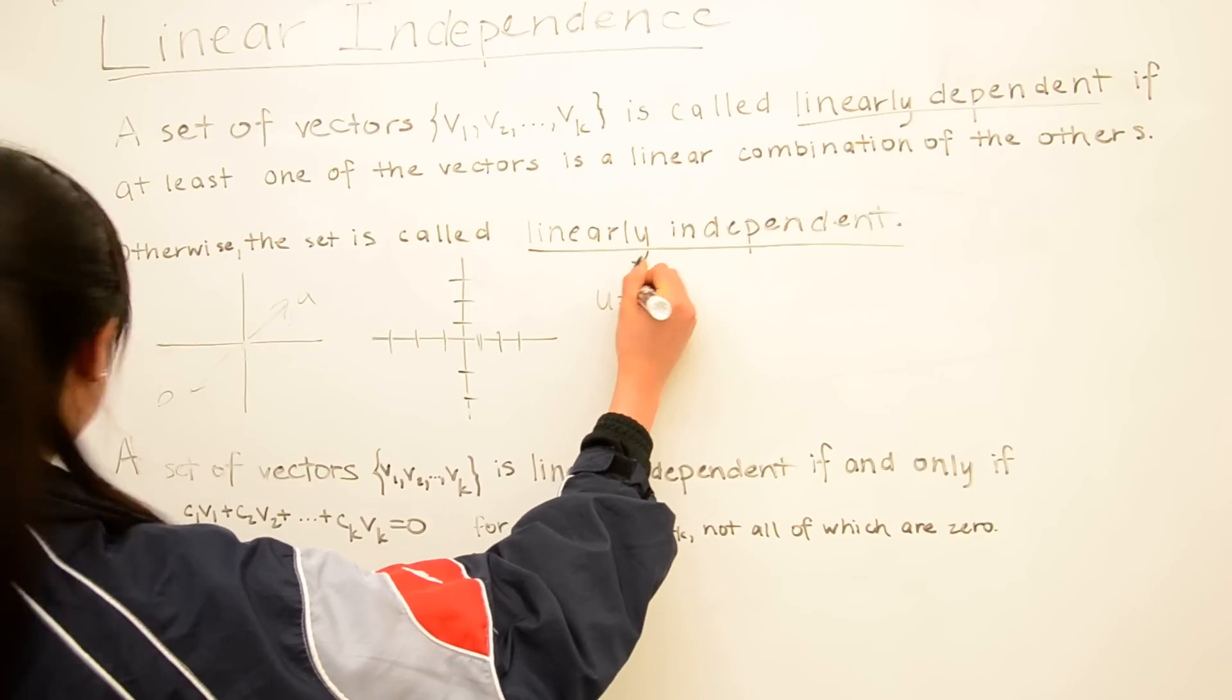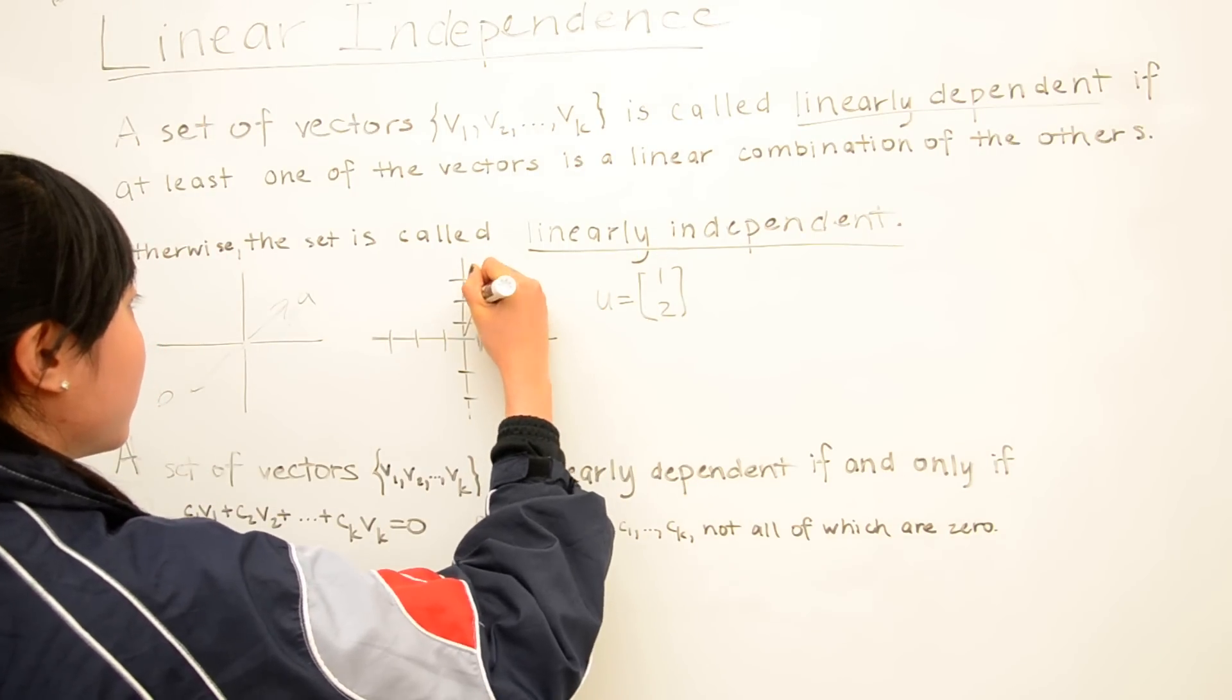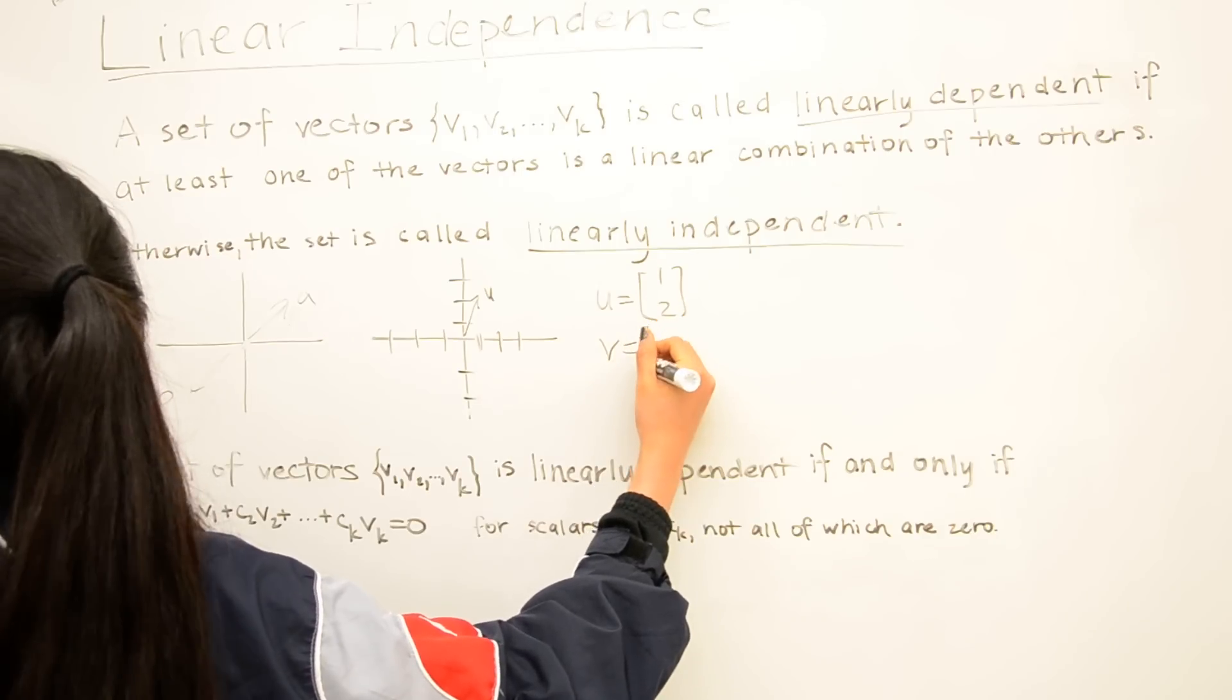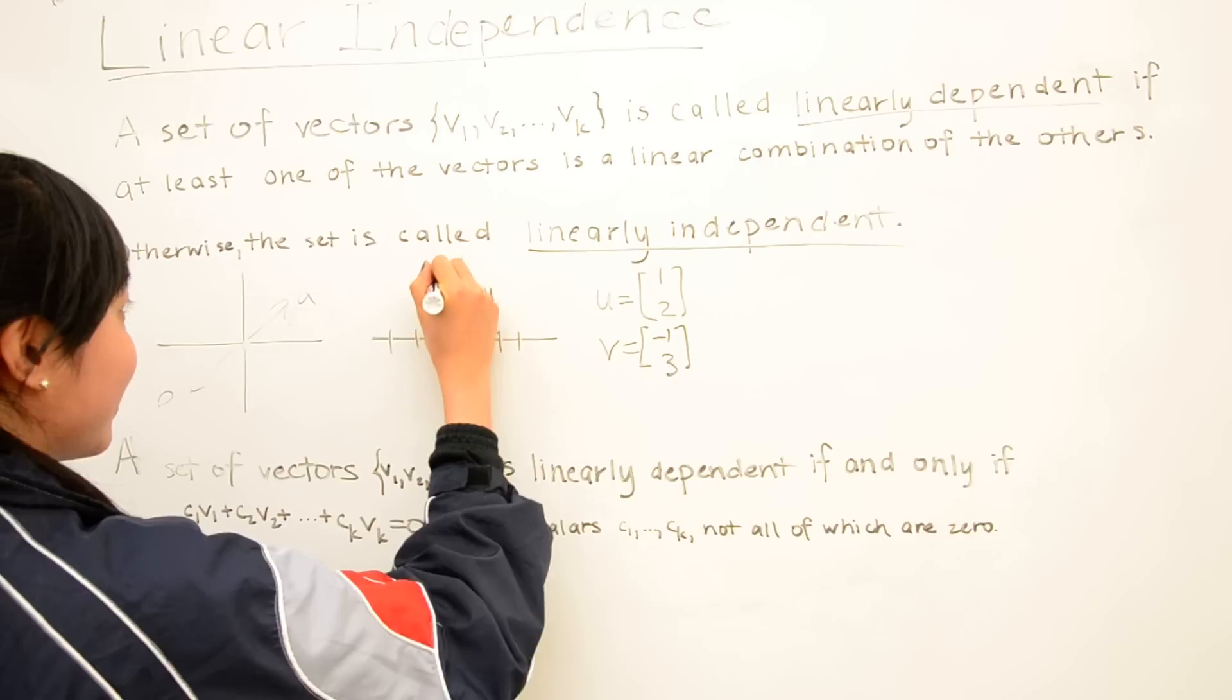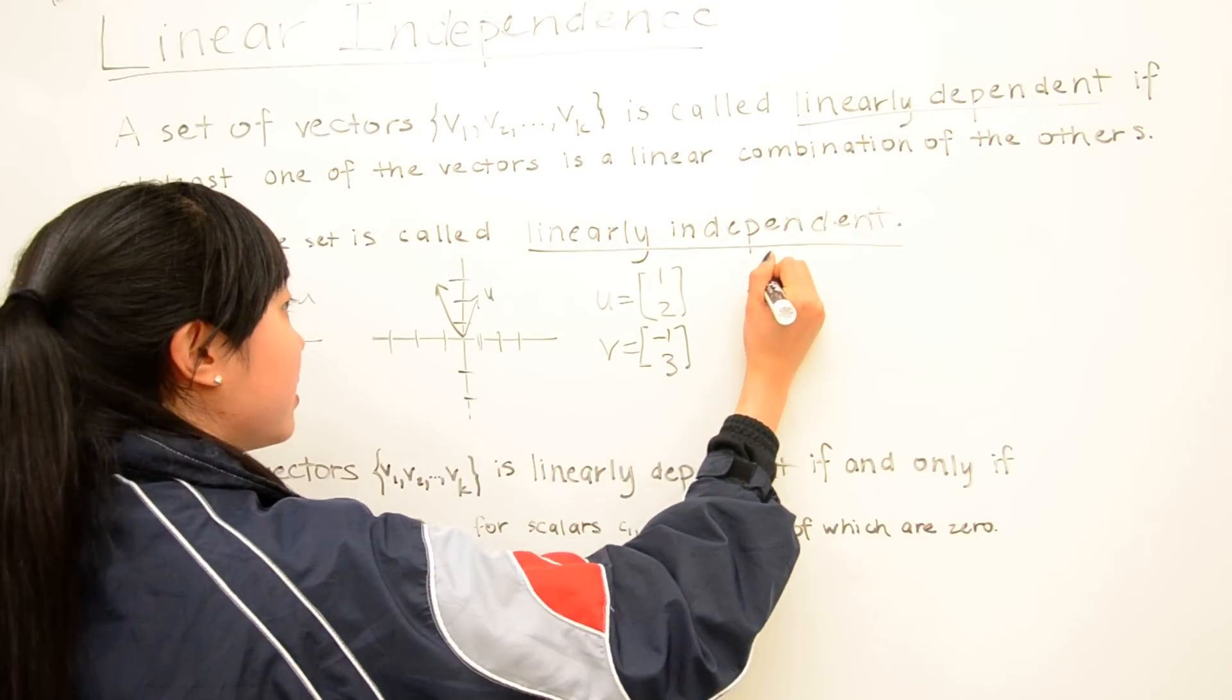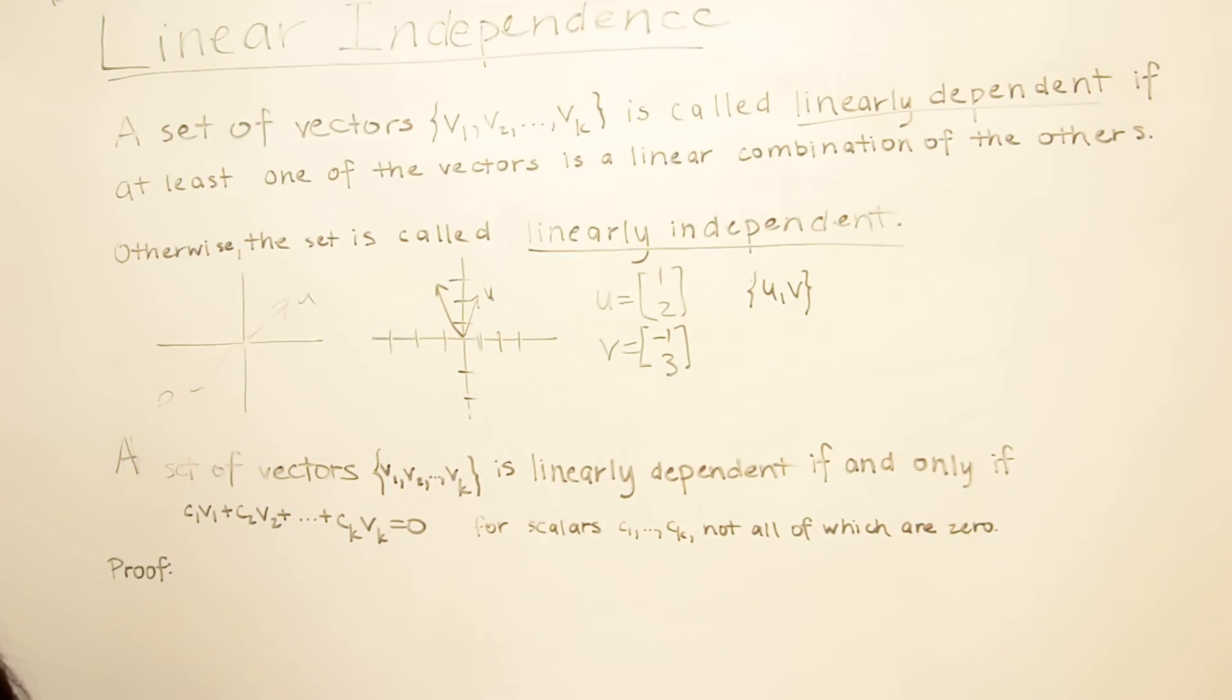As another example, say we have a vector u which is (1, 2) and v which is (-1, 3). Then the set {u, v} is linearly independent because u and v are not collinear and not linear combinations of each other.